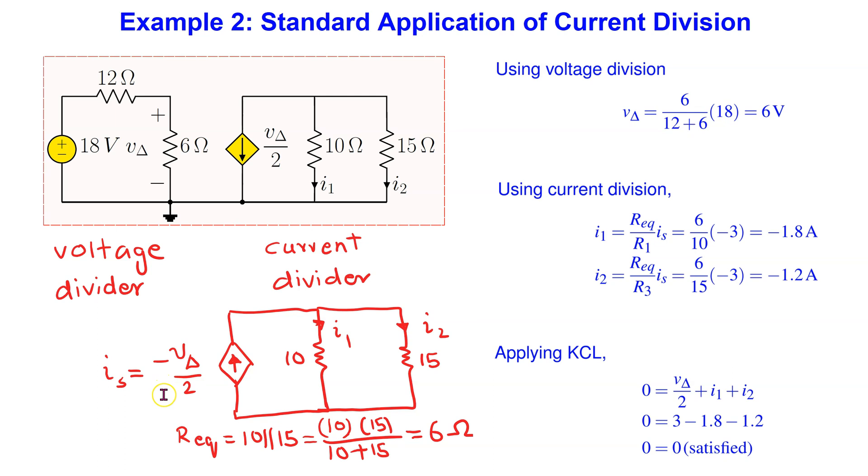We can redraw the current divider part of the circuit as shown where the dependent current source is pointing up. Thus, we introduce a negative sign in its magnitude.